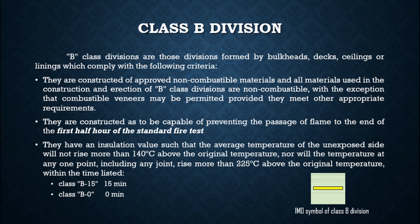Class B divisions must have an insulation value such that the average temperature of the unexposed side will not rise more than 140 degrees Celsius above the original temperature, nor will the temperature at any one point including any joint rise more than 225 degrees Celsius above the original temperature.